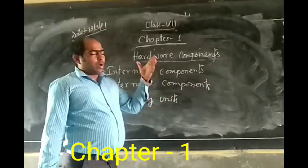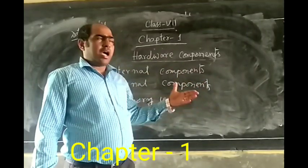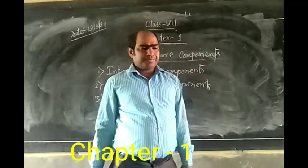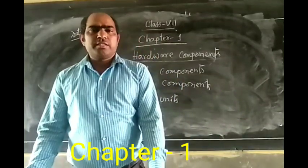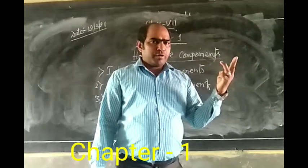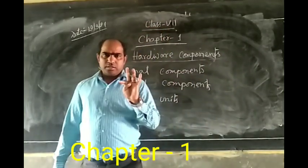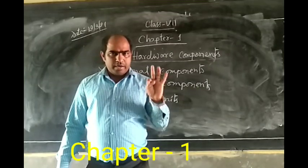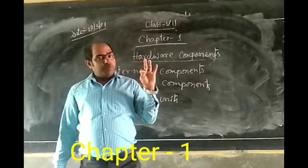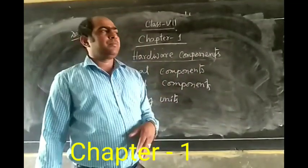That part we say is software. Today we will learn hardware parts. Hardware means physical parts of computers. You have seen a computer set — there are four main parts. You know, from class one you have learned: the four parts are CPU, monitor, keyboard, and mouse. Already you know.